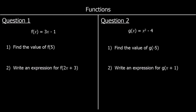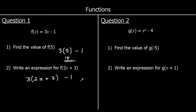For question 1, we've got a function f(x) = 3x minus 1. Find the value of f(5). So 5 is the input — change x to 5. So 3 times 5 minus 1. 15 minus 1 is 14. Question 2: find an expression for f(2x + 3). The input is 2x plus 3, so we're changing x into 2x plus 3. So 3 times (2x + 3) minus 1. Expand the bracket: 3 times 2x is 6x, 3 times 3 is 9. So 6x plus 9 minus 1, which is 6x plus 8.